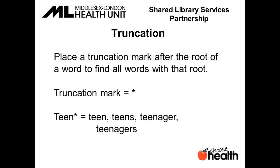The first and probably most heavily used tool is the truncation mark. Place a truncation mark after the root of a word to find all words with that root. This is useful for ensuring you don't miss any forms of a word and to save time. In the databases within the virtual library, the truncation mark is the asterisk. For example, if you place a truncation mark after teen, you will retrieve all forms of the word including teens, teenager, and teenagers.